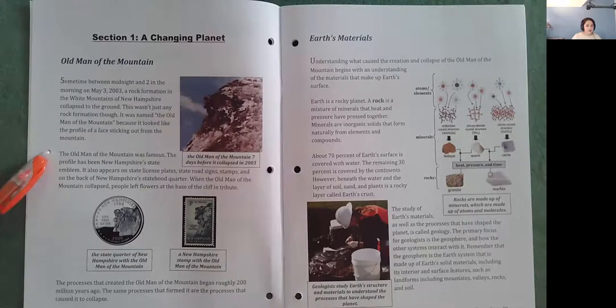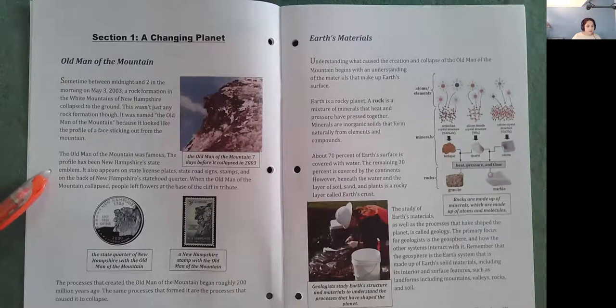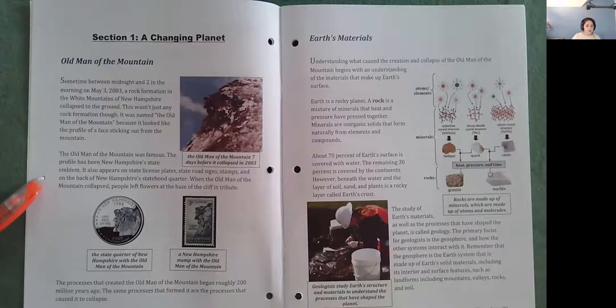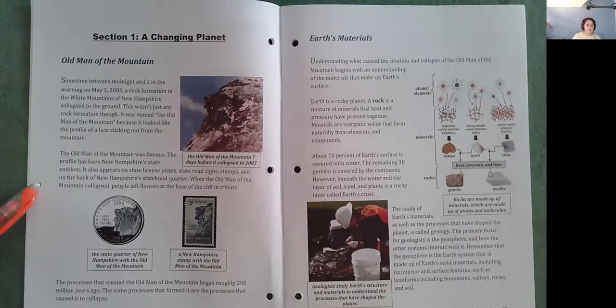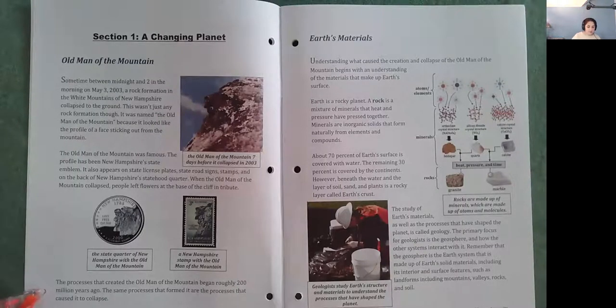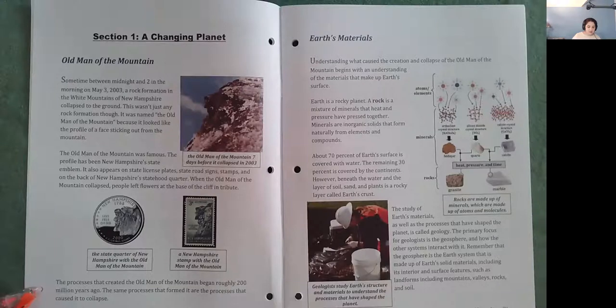The Old Man of the Mountain was famous. The profile has been New Hampshire State emblem. It also appears on the state license plates, state road signs, stamps, and on the back of New Hampshire's statehood quarters. When the Old Man of the Mountain collapsed, people left flowers at the base of the cliff in tribute. The processes that created the Old Man of the Mountain began roughly 200 million years ago. The same processes that formed it are the processes that caused it to collapse.